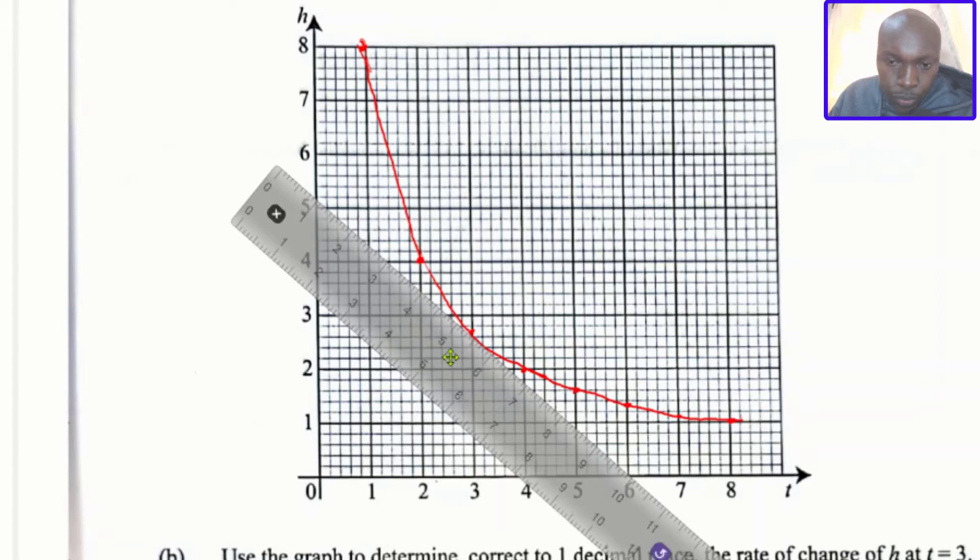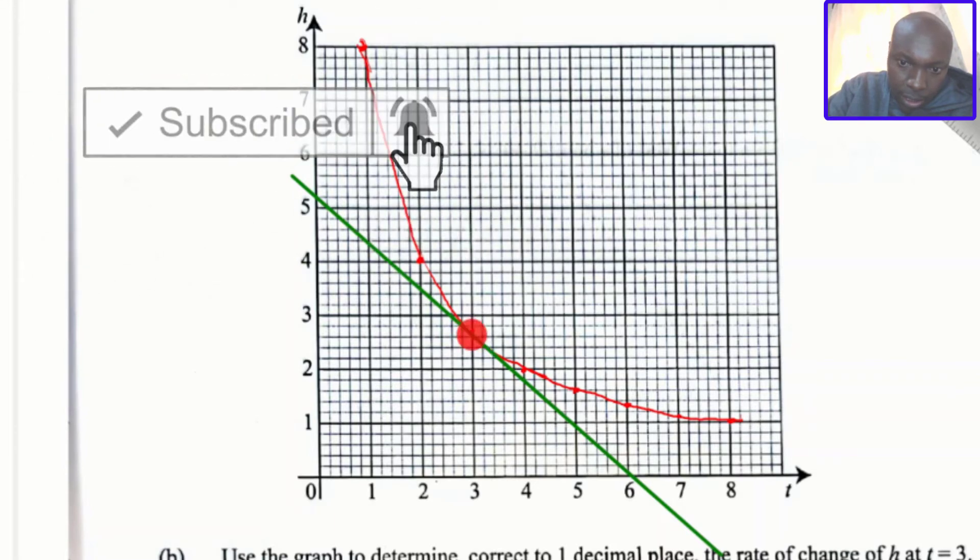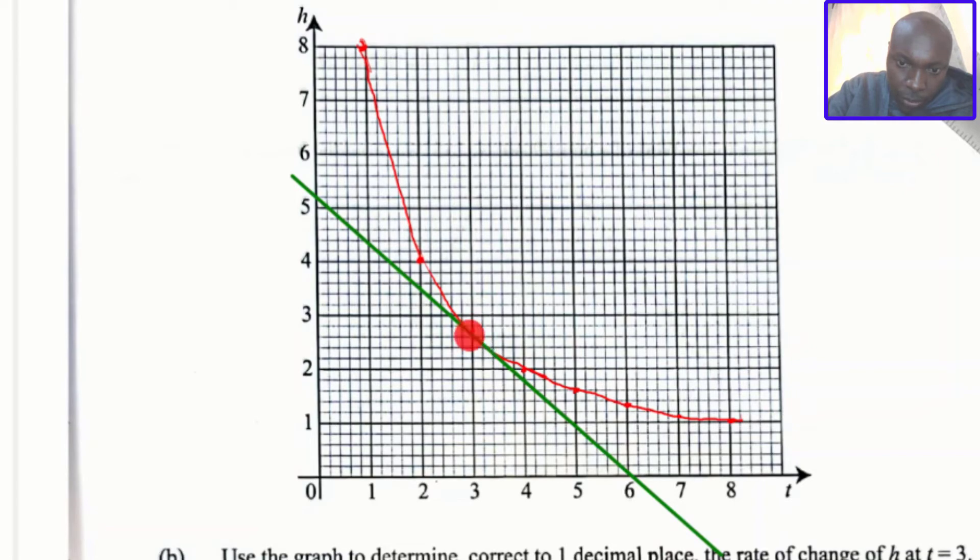So you ensure that the tangent attaches that curve at t is equals to 3. It must pass through that point. So that is what I'm doing. And when you draw that, there is the tangent. So you can see it touches exactly at this point. This is where the tangent is supposed to touch that curve at t is equals to 3.